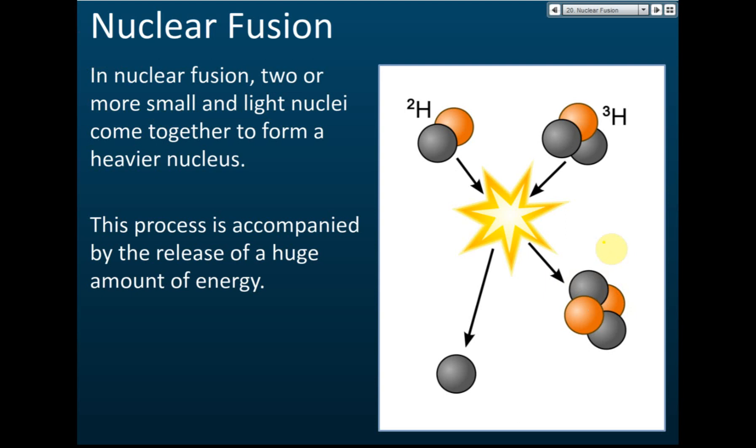It produces a helium. This one is helium, this is deuterium - an isotope of hydrogen. This is tritium, also an isotope of hydrogen. After the reaction it produces a helium and hydrogen.